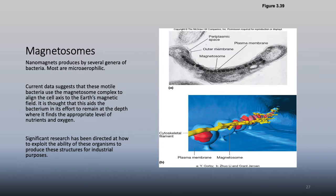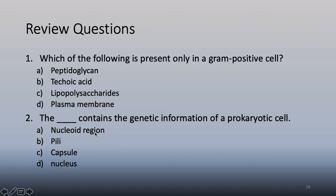Magnetosomes are fascinating - bacteria can detect Earth's magnetic field, possibly to maintain a certain depth. Review questions: the structure present only in gram-positive cells is teichoic acid; lipopolysaccharides are found in gram-negative cells. The nucleoid region contains the genetic information of a prokaryotic cell.